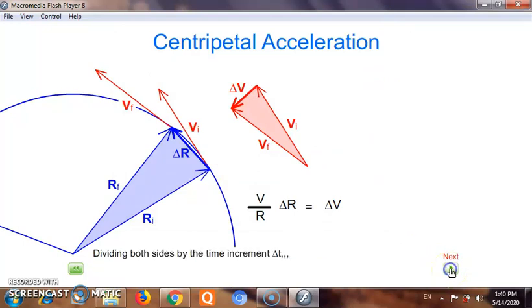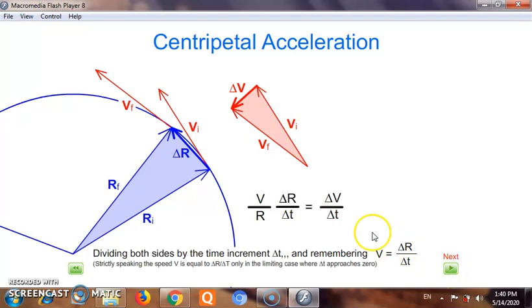I divide both sides by delta t and then I will find it looks like this: delta v upon delta t is equal to v upon r into delta r by delta t.